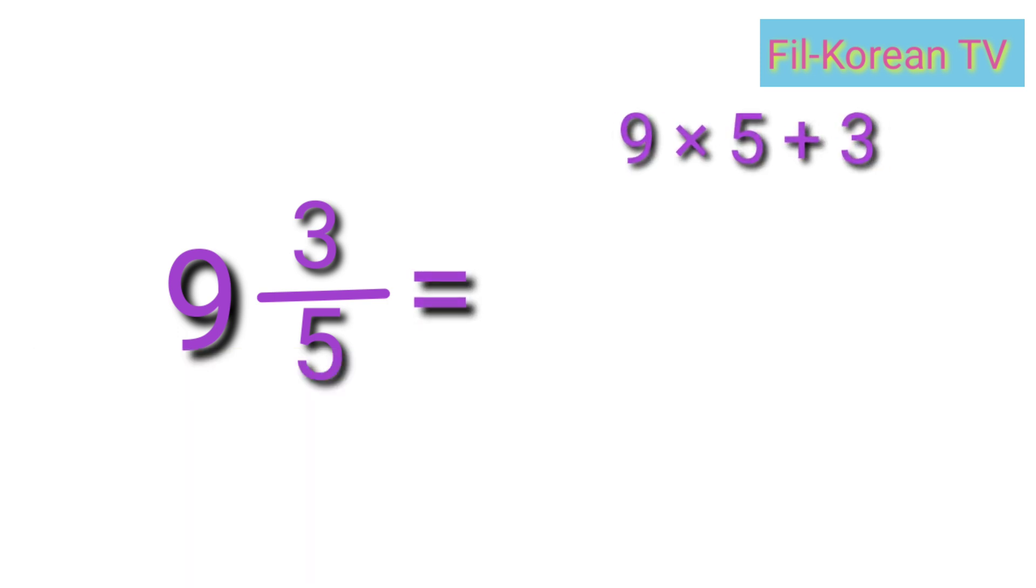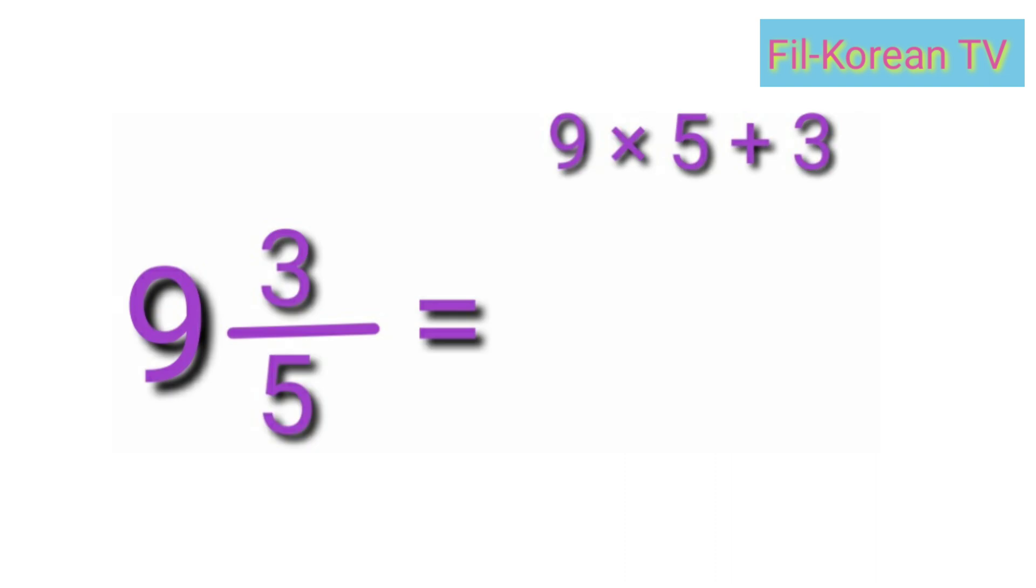Okay, let's answer. Nine times five equals forty-five, plus three equals forty-eight. Copy the denominator, five. The answer is forty-eight-fifths or forty-eight over five.